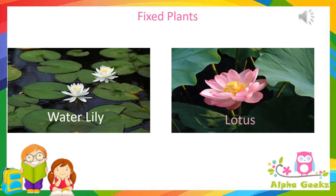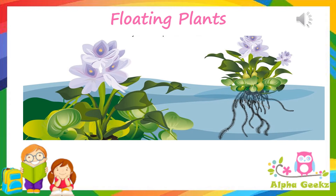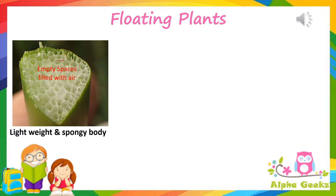Floating plants: these plants float freely in water. They are not fixed at the bottom of the water body, unlike fixed or underwater plants, but their roots just float below the water surface. These plants are able to float freely because they are small and lightweight, due to a number of empty spaces throughout their spongy body.